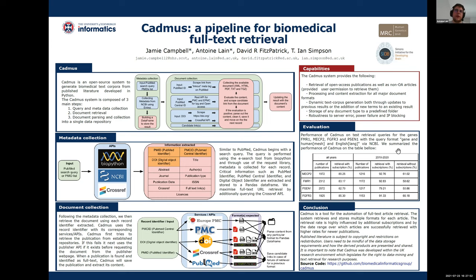During metadata collection, we are using Biopython, NCBI, and Crossref API and services to collect key information for the user and for Cadmus. We are especially looking for three record identifiers: the PubMed identifier, also known as PMID; the PubMed Central identifier, PMCID; and the digital object identifier, DOI. On top of that, we are collecting the title, the abstract, the authors, the journal, the publication type and date, and the licenses.